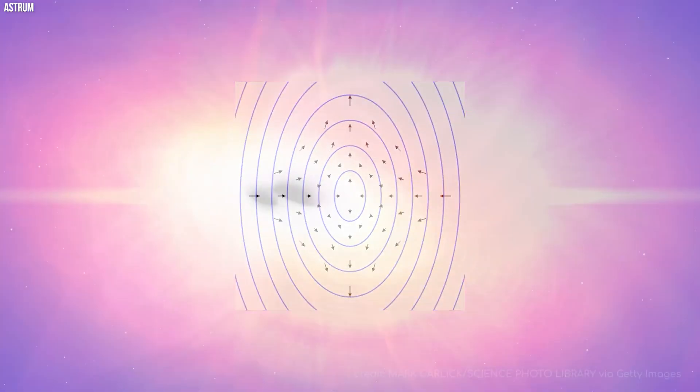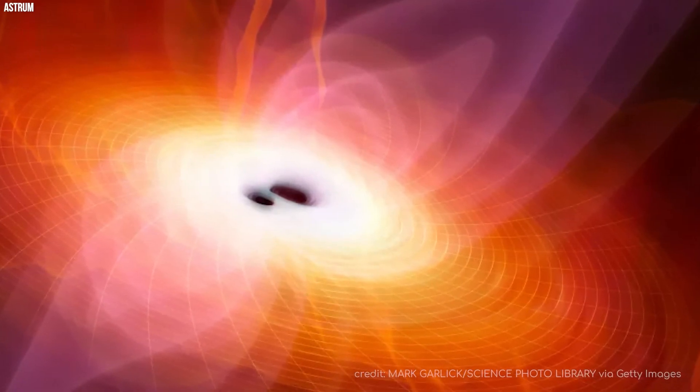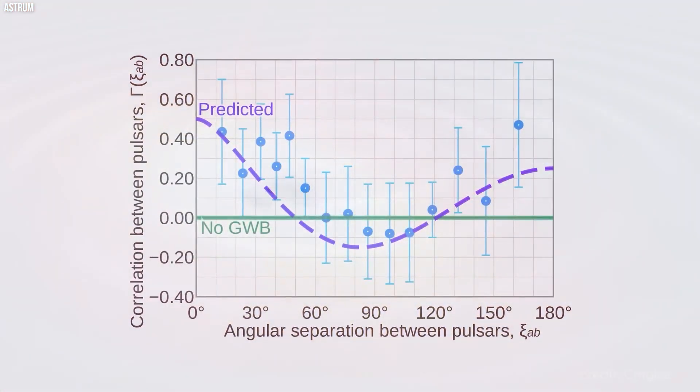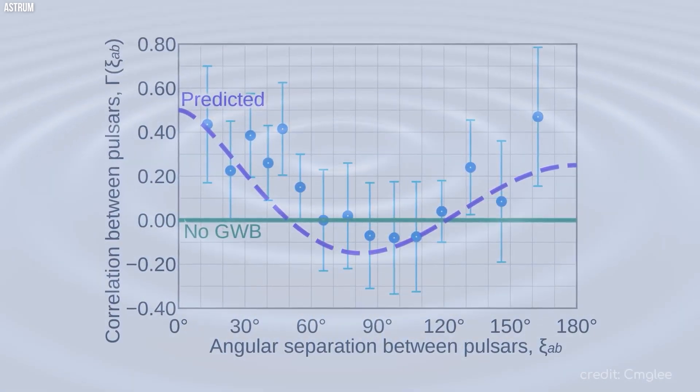Pulsars seem to flicker on and off—the reason astronomers initially thought they were pulsating stars. But this results from the light generated by these jets turning towards us at incredibly precise regular intervals. This makes pulsars an excellent timing device.